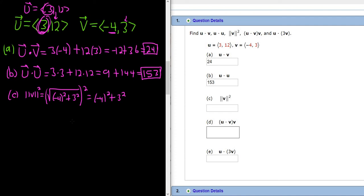So if you square the magnitude, what happens is you just get negative 4 squared plus 3 squared. So you just get v dotted with itself. The magnitude of v squared is actually v dot v.